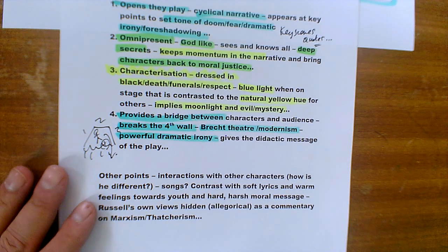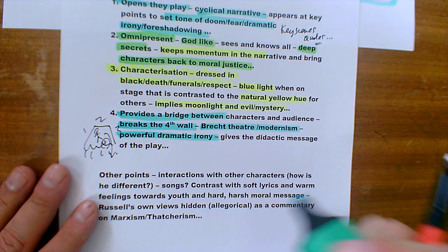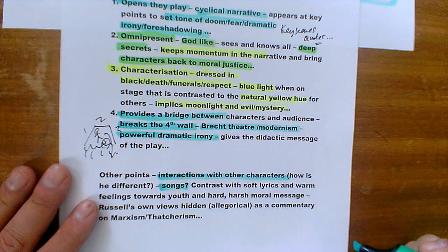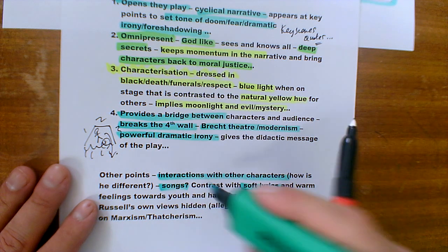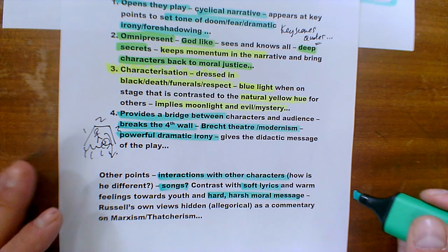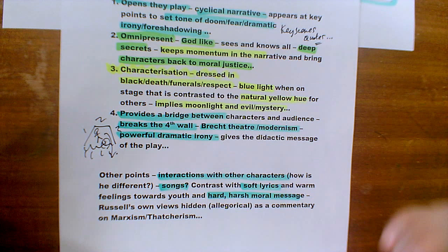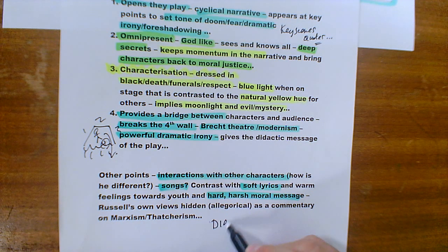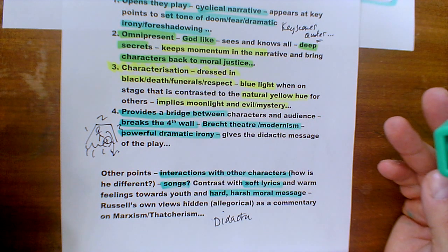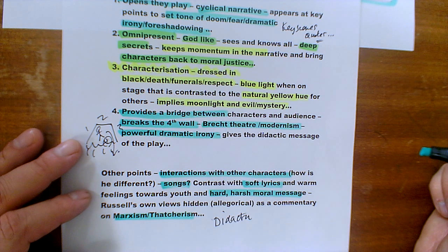The narrator in particular facilitates that because he speaks and appears in strange places and speaks directly to the audience. Other points to consider are his interactions with other characters, how he is different, and the songs he sings — there's a contrast between his soft, warm lyrics about youth and his hard, harsh moral messages that provide an allegorical standpoint for Willie Russell to convey the didactic message of the text about consequences, social injustice, Marxism, and Thatcherism.